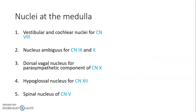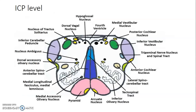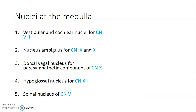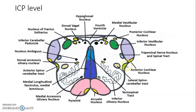Nuclei located in the medulla include: vestibular nuclei and cochlear nuclei for the vestibulocochlear nerve (CN 8); nucleus ambiguus used by glossopharyngeal and vagus nerves; dorsal vagal nuclei carrying parasympathetic components of cranial nerve 10; hypoglossal nucleus; and the spinal nucleus of the trigeminal nerve. You may be asked to list all nuclei at the medulla oblongata.